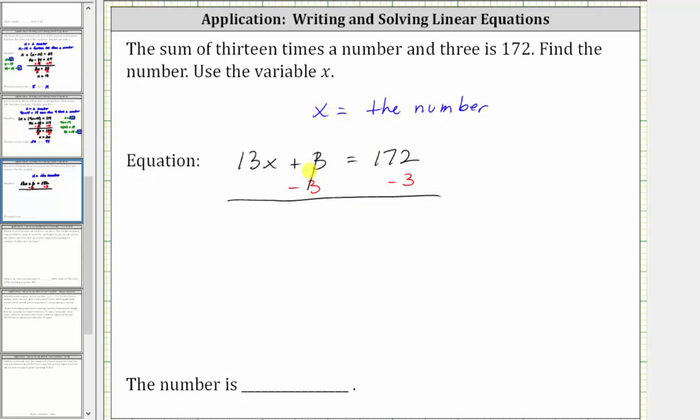Simplifying, three minus three is zero, which is why we subtracted three on both sides. We now have 13x on the left equals 172 minus three on the right, which is 169.